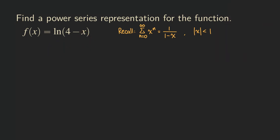When we take the derivative f prime, we get one over four minus x, and then we multiply by the derivative of the inner function, which is negative one. So f prime simplifies to negative one over four minus x.